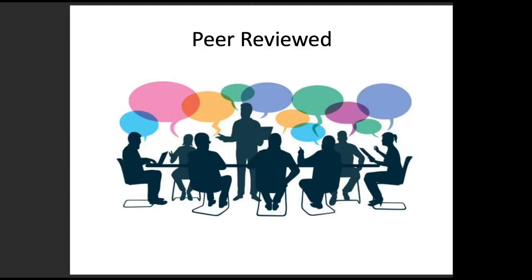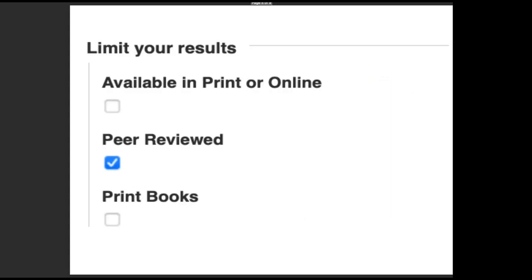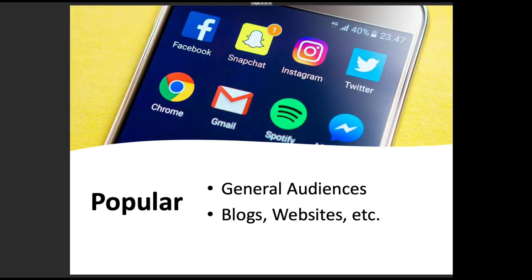Peer-reviewed are scholarly articles that undergo a rigorous review process by other experts in the field before publication. While all peer-reviewed articles are scholarly, not all scholarly articles are peer-reviewed. When using a database, you can check if an article is peer-reviewed by using the peer-review limiter.